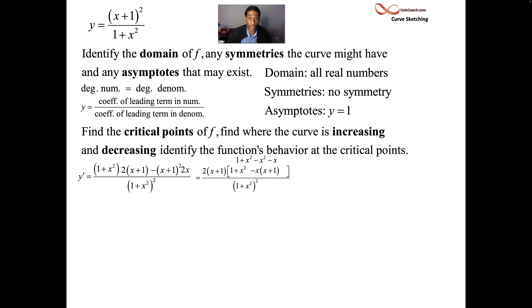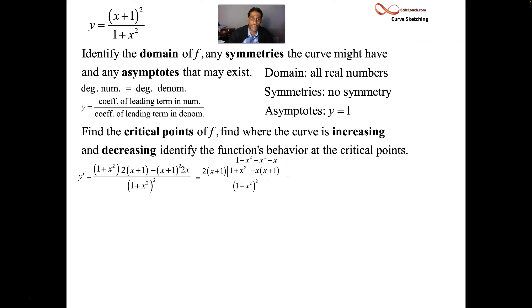We have two factors already: the 2 and the x plus 1. What we need to know is what's going on with the square bracket. When we multiply out, we actually end up canceling — the x squared terms cancel, and you're left with 1 minus x.